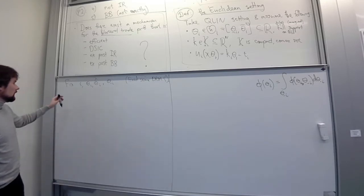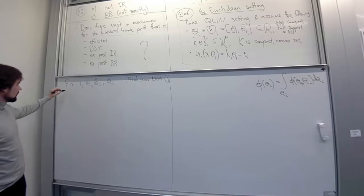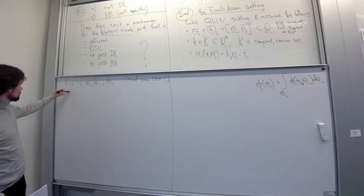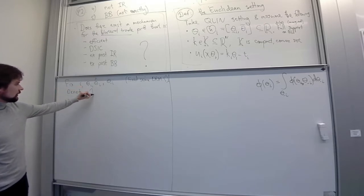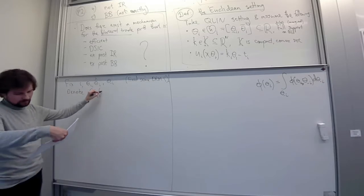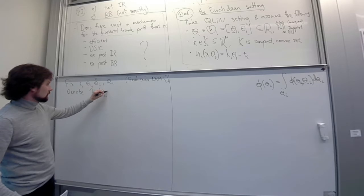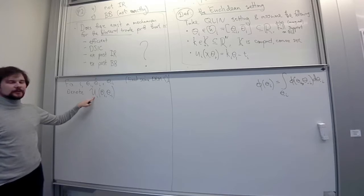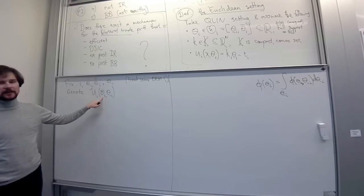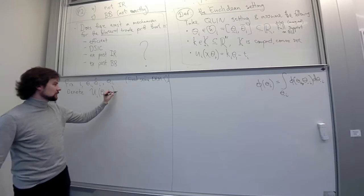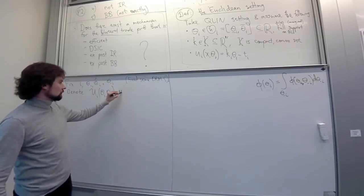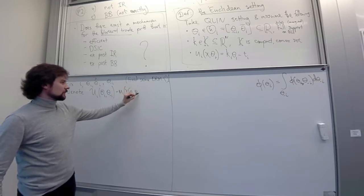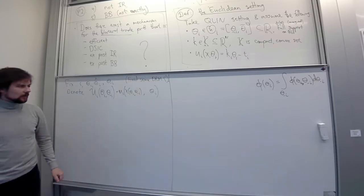Before stating the incentive compatibility condition, let me introduce a definition. Denote big U_i of theta_i, theta_{-i} as the utility from telling the truth for type theta_i given the profile of other types theta_{-i}. So it is just small u_i of the outcome x(theta), evaluated at the true type theta_i.